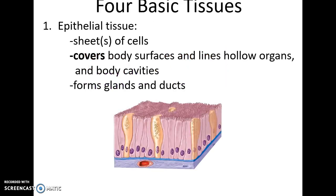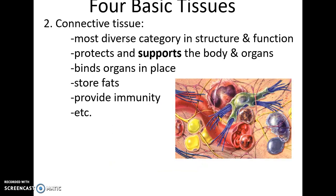Epithelial tissue is one of the four basic types. It comes in sheets of cells with very little extracellular material. It covers body surfaces and lines hollow organs and cavities, and also forms glands and ducts. Connective tissue is the most diverse category in both structure and function. It provides protection, supports the body and organs, binds organs in place, stores energy in the form of fats, and provides immunity.